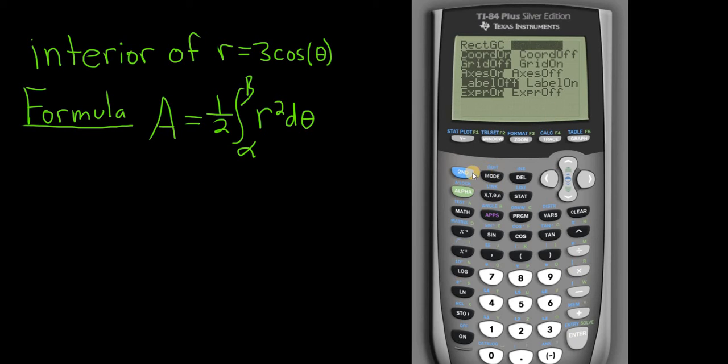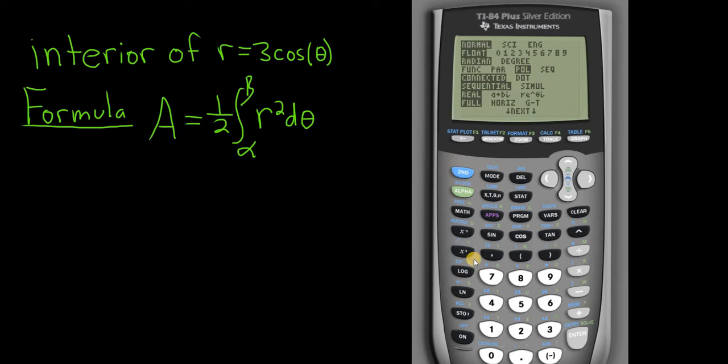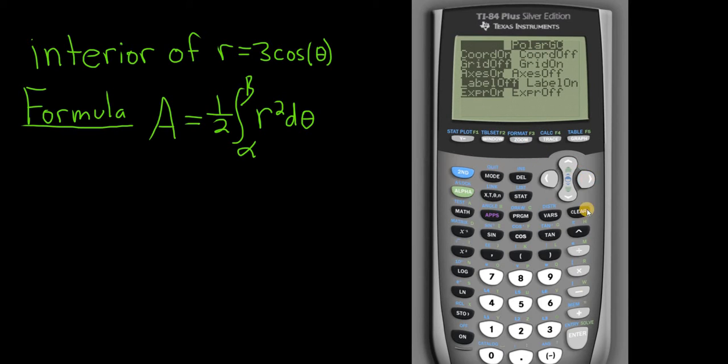Okay, so let me get out of here by hitting quit, second, quit. So recap, go to mode, turn the polar coordinates on, go to format, turn on the polar graphing coordinates, and then just get out of here by hitting second mode.